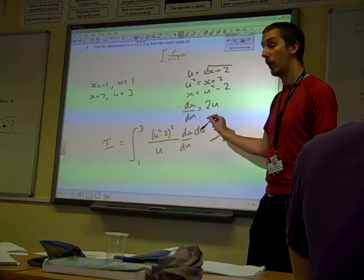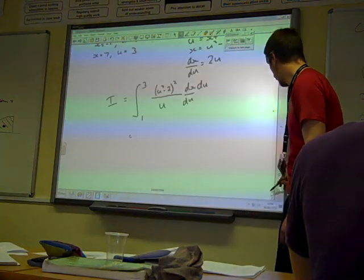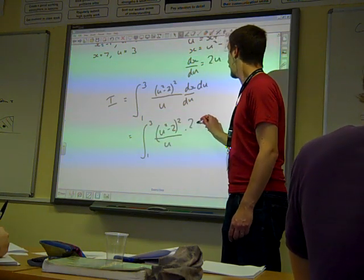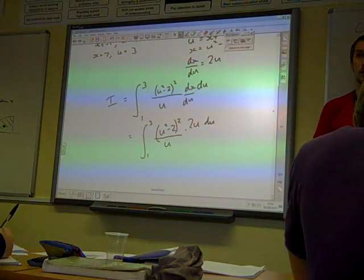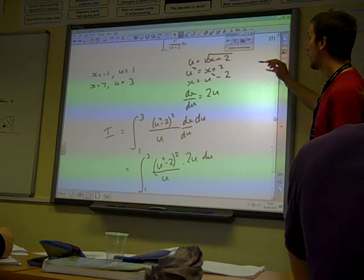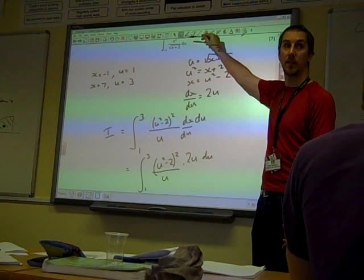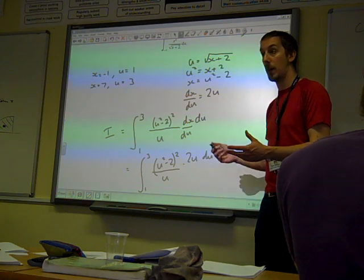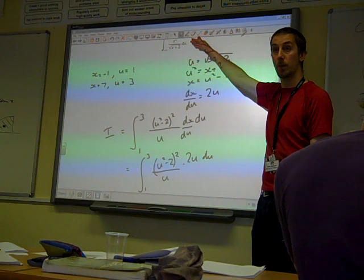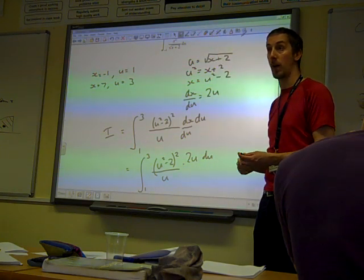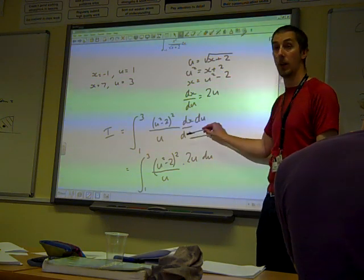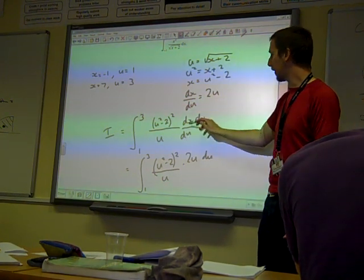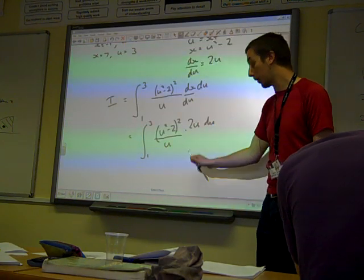Well, DX by DU is 2U. So our next line has that being the integral of U squared minus 2 squared over U times 2U DU. Where do you get the DX DU? OK. If we're going to change this so it's in terms of U instead of X, then we need to have a DU there. So now we can't just swap them because they're not equal to each other. But what we can do is we can multiply the expression by 1. Because that doesn't change it. You can always multiply by 1. And so I've multiplied DX by DU over DU now. Because DU over DU is 1.